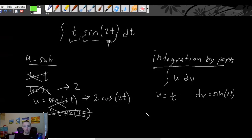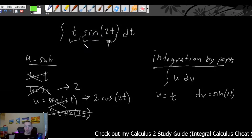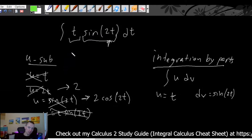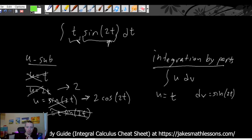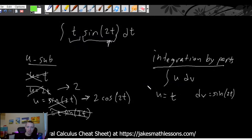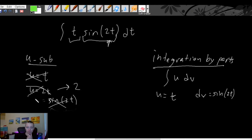Earlier we talked about this one and we said, based on the fact that there isn't anything in this function where if we made that little piece be u, that thing's derivative is not somewhere else in the function. There's no u we could pick where that thing's derivative would also be somewhere else in the function. So that tells us u-substitution is probably not a great pick. However, since we are given something clearly in the form of one function times another — t times sine of 2t — the integration by parts formula is going to be fairly easy to apply.